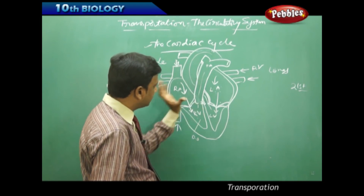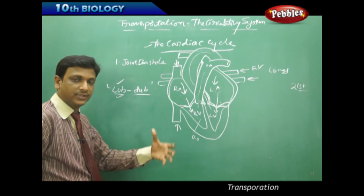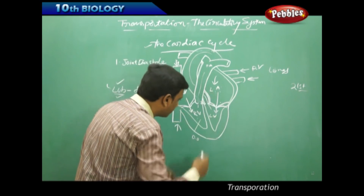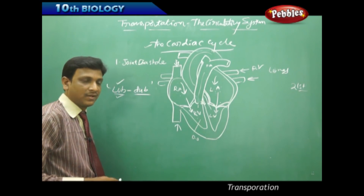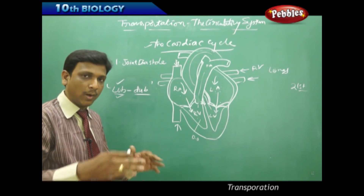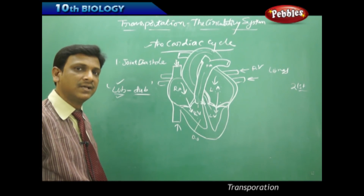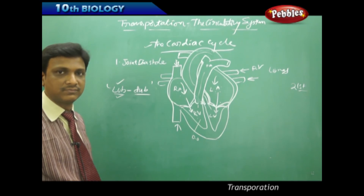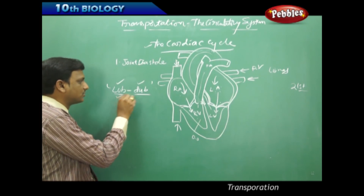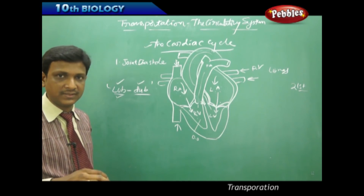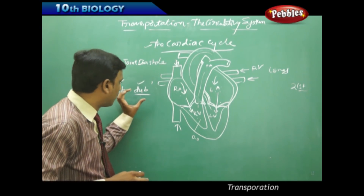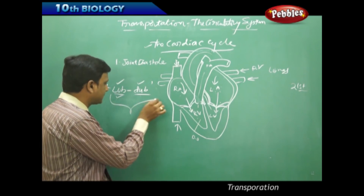After this, during atrial systole, the atria contract and blood is passed into the ventricles. The valves are opened with force, and they also make a sound, but it is a bit low and dull, called 'dub.' Both sounds are not of equal level — one is a bigger, louder sound and the other a smaller, duller sound — but both together comprise one heartbeat.